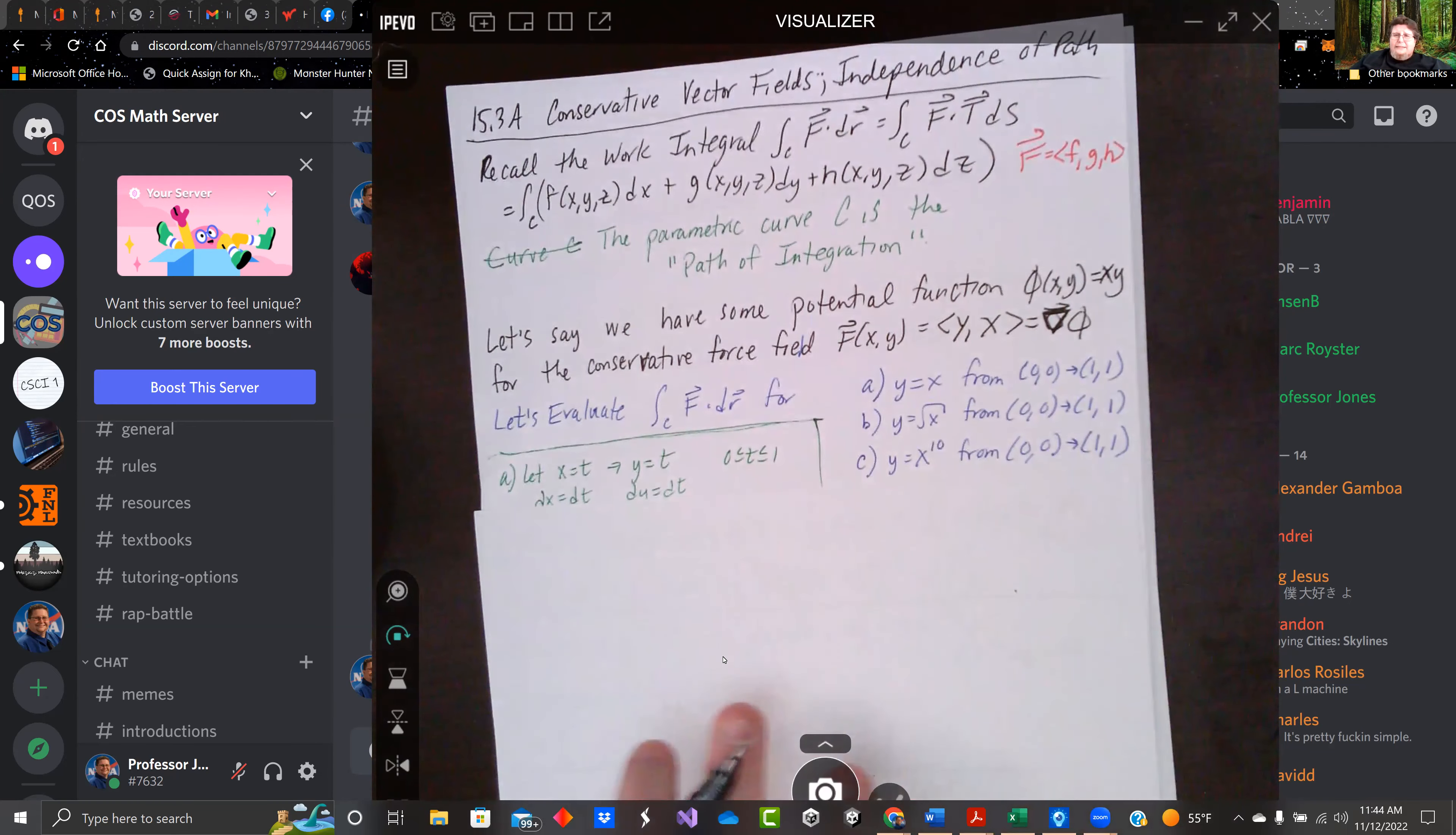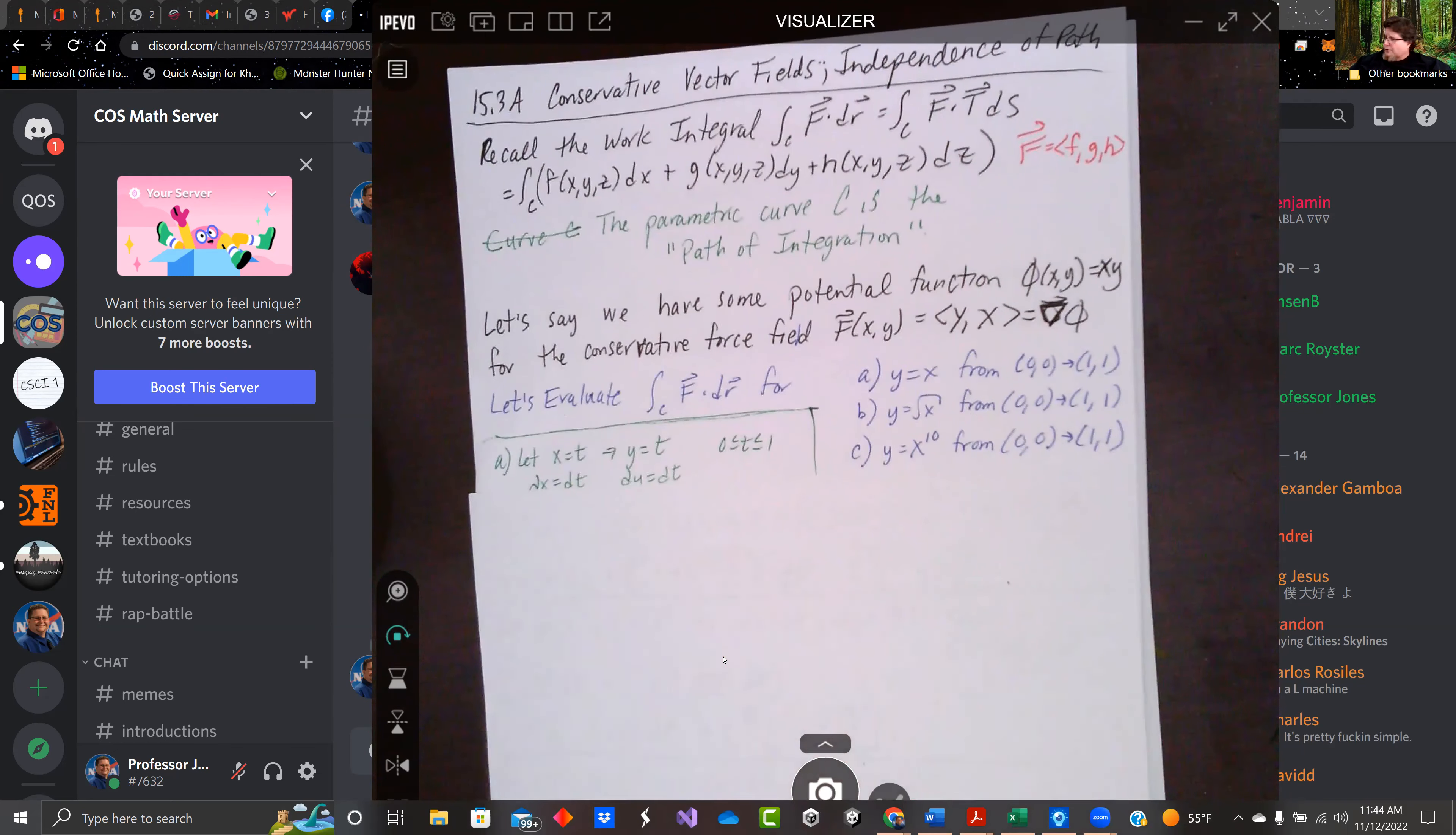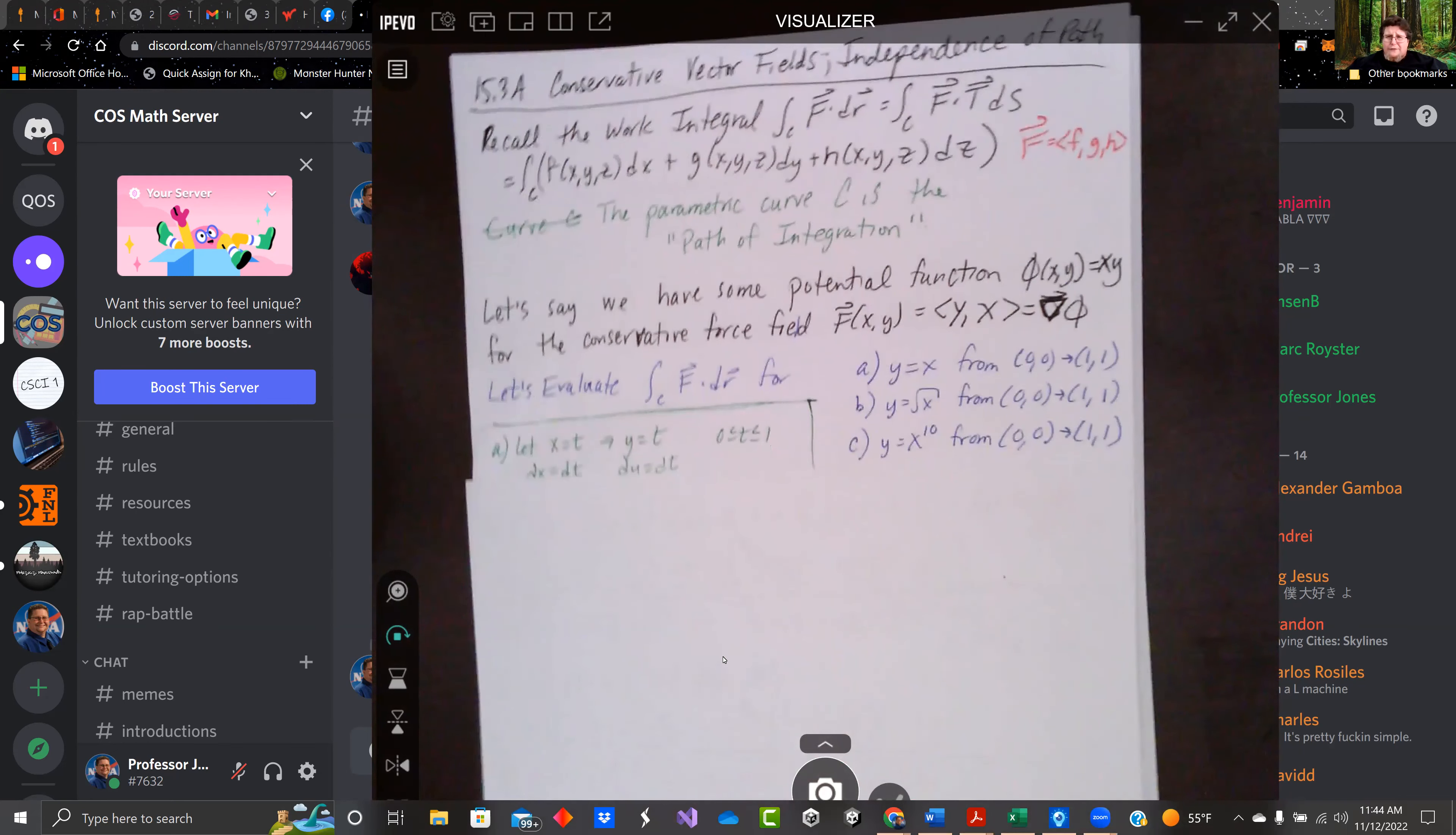We're going to evaluate our line integral f dot dr along three different paths. We're going to go from 0, 0, and they're all going to go to 1, 1. We're going to do y equals x. We're going to do y equals square root of x. And we're going to do y equals x to the 10th.